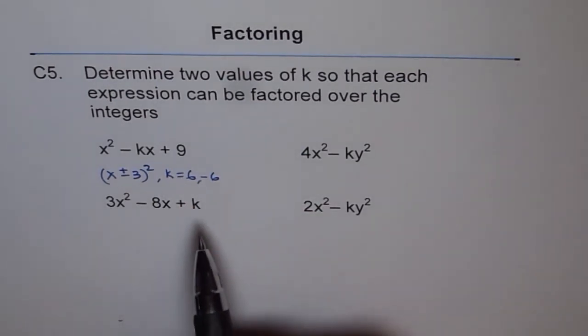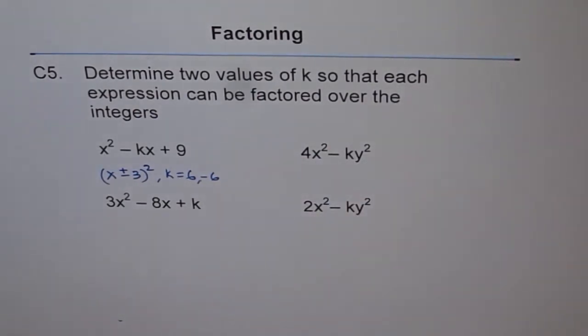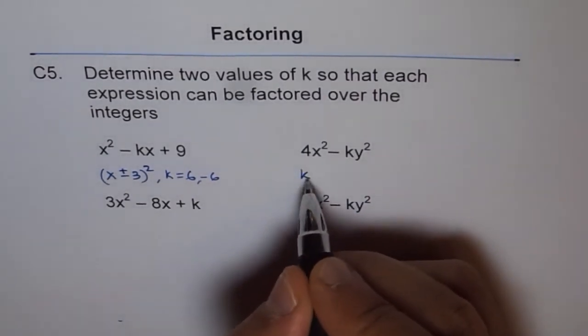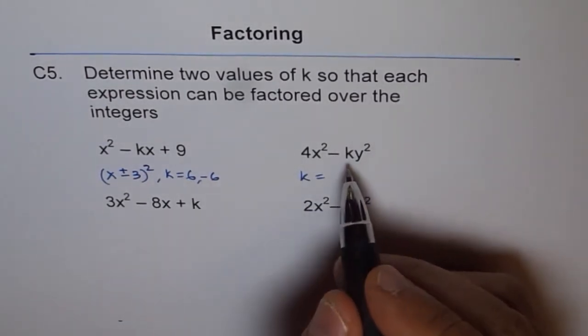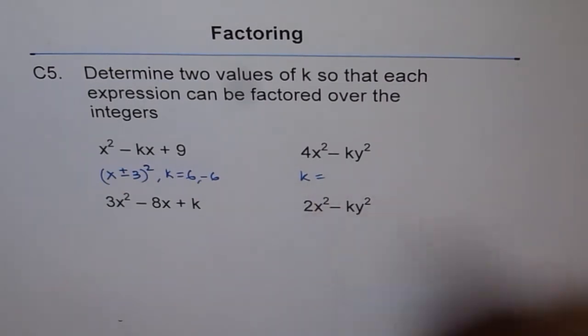Similarly, let us do the others. 4x square minus ky square. Now, in such a situation, k value is just a perfect square. Any value of k which is a perfect square, it could be 2 square, 3 square, 4 square, 1 square, all will work.